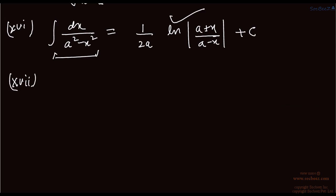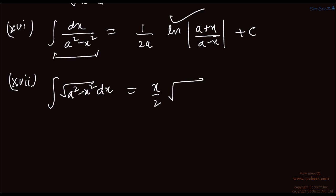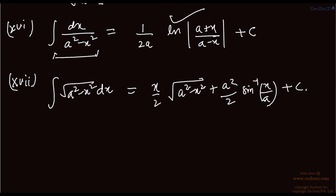The seventeenth formula: the integral of root of (a² − x²) dx. In this case, we put x = a sin θ (or x = a cos θ — it doesn't matter, both give the same answer). The result is x/2 times root of (a² − x²) plus a²/2 times sine inverse (x/a) plus c.